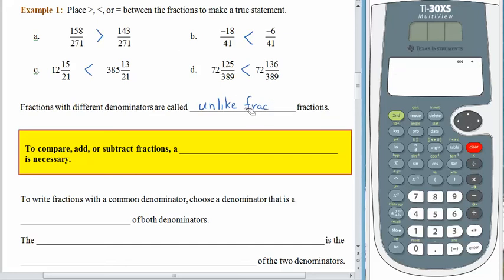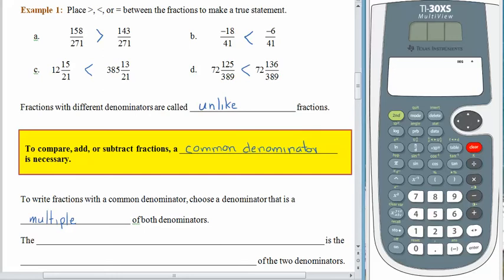We just need the word "unlike" in the blank. So like we said before, if we want to compare fractions, add fractions, or subtract fractions, we have to have a common denominator — a common denominator is necessary. And so what we do is we choose a denominator that is a multiple of both denominators. When we were creating equivalent fractions, we often took the numerator and denominator and multiplied by the same amount, so our job is to get a denominator that's the same for a pair of fractions.